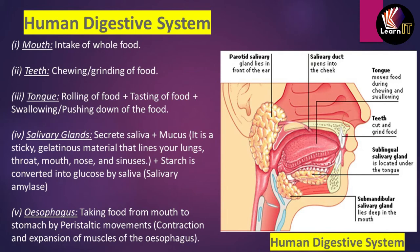Saliva also contains a special enzyme known as salivary amylase, which helps to convert starch into glucose. That is why when we eat a chapati for a longer time without any dish, it starts to taste sweet — because the salivary amylase continuously converts the starch in the chapati into glucose.